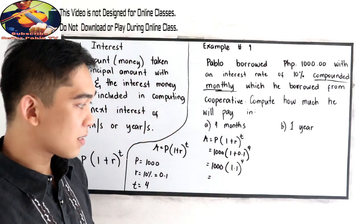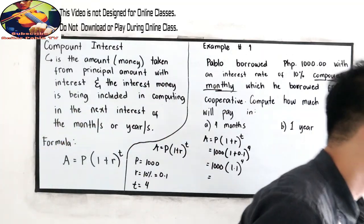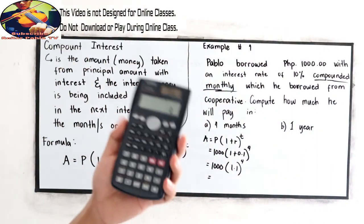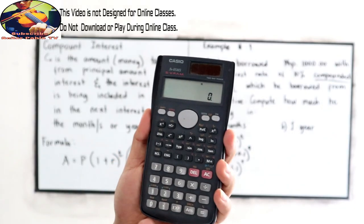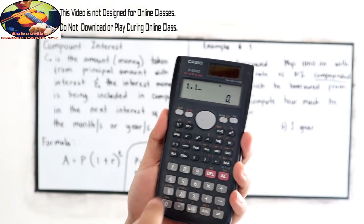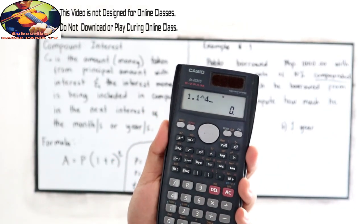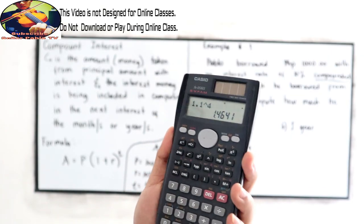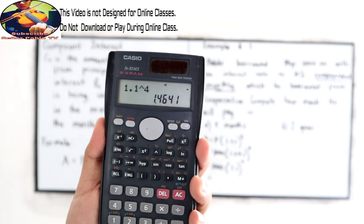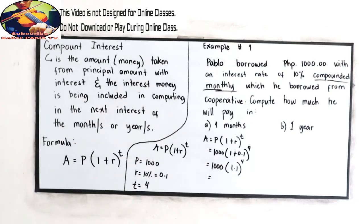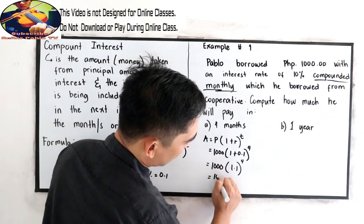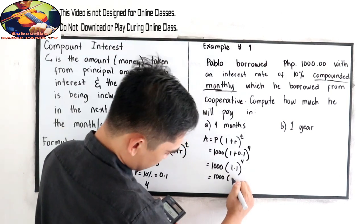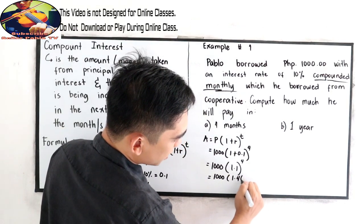Our rule in order of operations, exponent first. So we have, use your calculator, 1.1 raised to 4, this is our raised, that is 1.4641. So 1,000 times 1.4641.